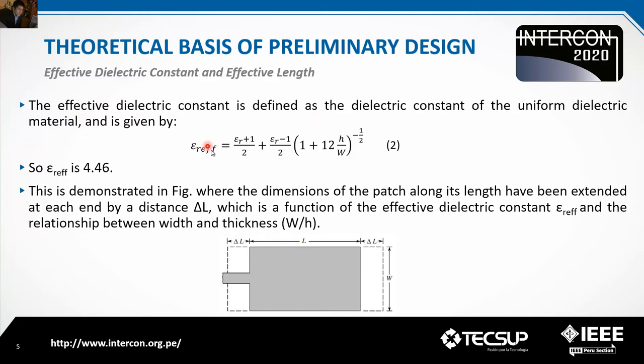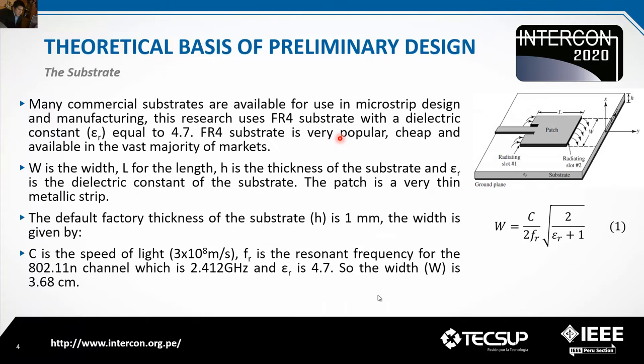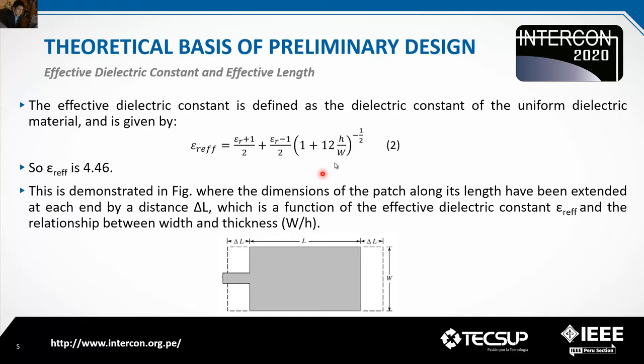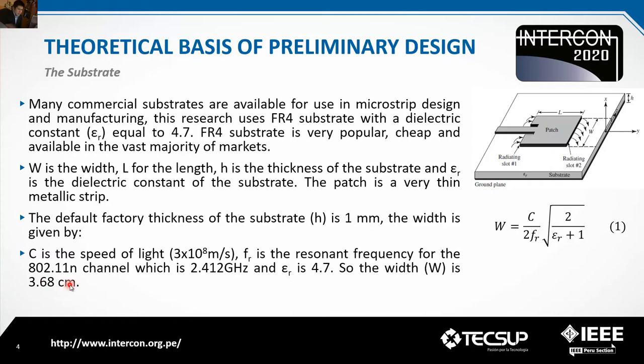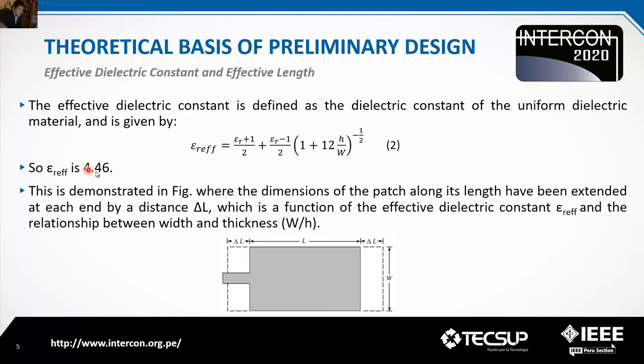Now you can calculate the effective dielectric constant. The effective dielectric constant is based on the dielectric constant, height, and width. The height (substrate thickness) is 1 mm, ER is 4.7, and the width is 3.68 cm. So the effective dielectric constant is 4.46.